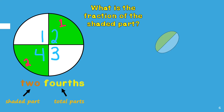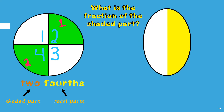What is the fraction of the shaded part in this figure? To figure out the fraction of this figure, first count the number of parts: one, two. This will represent the last word in our fraction. Since there are two parts it is partitioned into halves. This represents the total number of parts. Then we will count the number of shaded or colored parts: one. So we will write one in front of half. This represents the number of parts that are shaded.